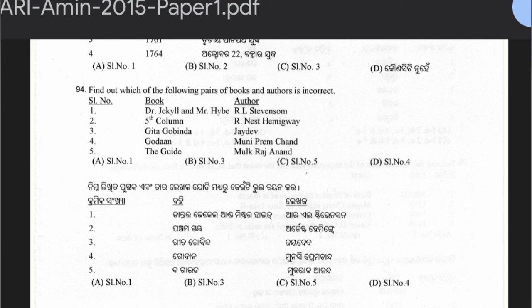Question 94: Match books and authors. Dr. Jekyll and Mr. Hyde — R.L. Stevenson; The Fifth Column — Ernest Hemingway; Gita Govinda — Jayadev; Godan — Munshi Premchand; The Guide — Mulk Raj Anand. The answer is option C — serial number 5 is incorrect, because The Guide was written by R.K. Narayan, not Mulk Raj Anand.